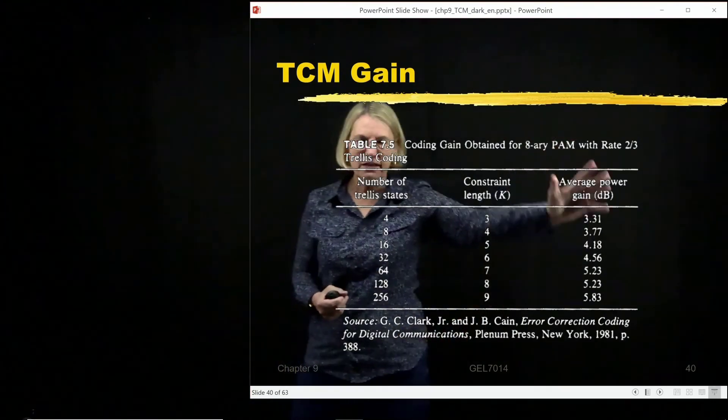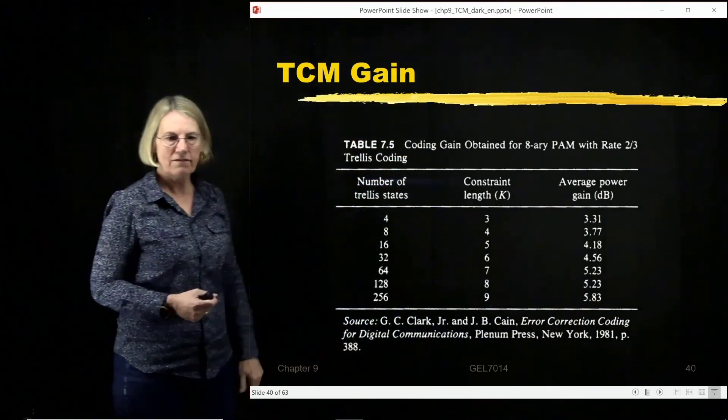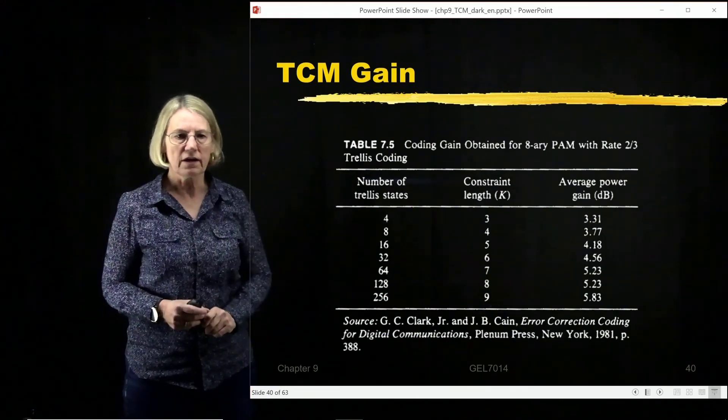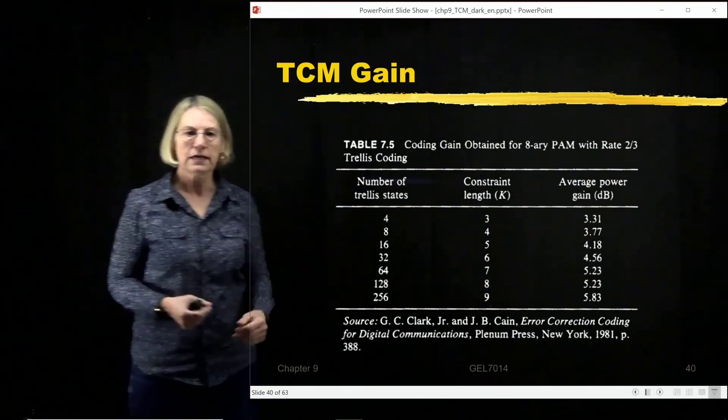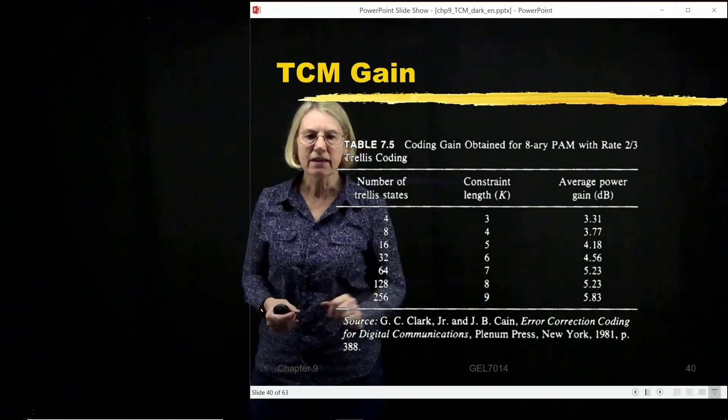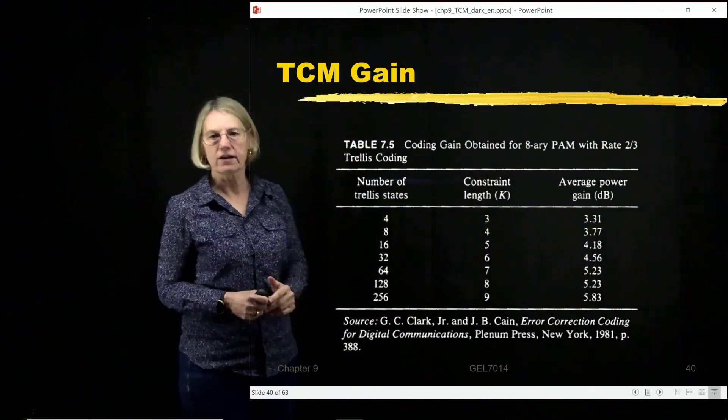And this is the gain that you can get with very good error-correcting codes. And so you can see the tradeoff as you go up in constraint length, which is a complexity tradeoff.